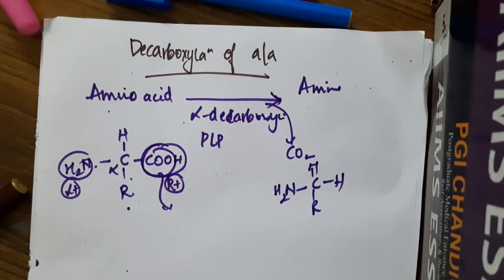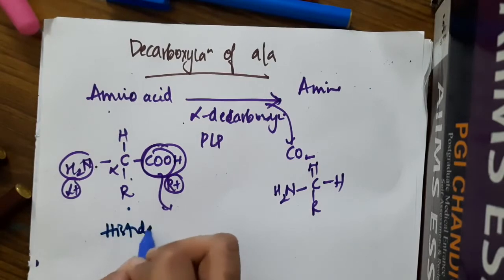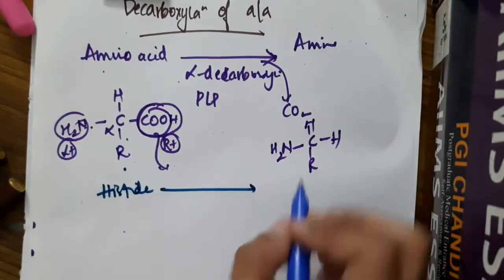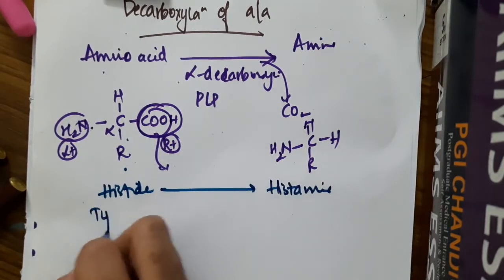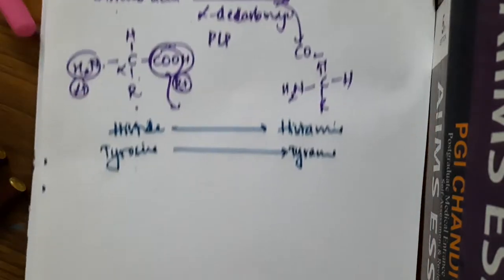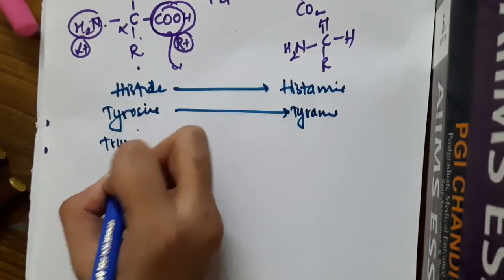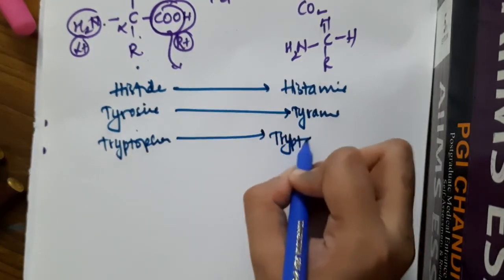The examples of this decarboxylation include: histidine is an amino acid, on decarboxylation it forms histamine. Tyrosine on decarboxylation forms tyramine. The amino acid tryptophan on decarboxylation forms tryptamine.